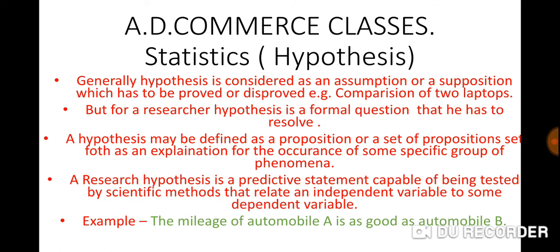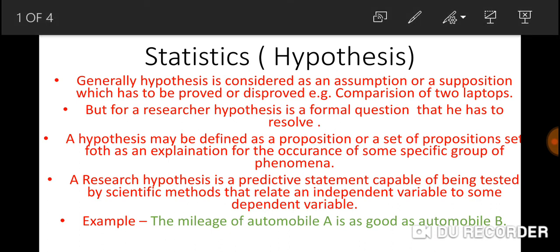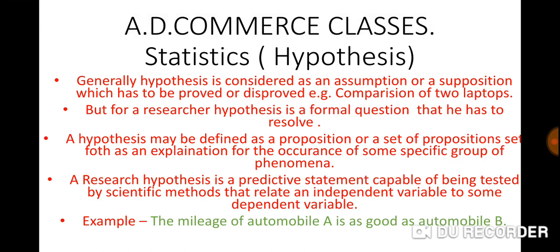If we talk about independent and dependent variables: a child's performance or result depends on how they study — the class or school environment. So the child's result is the dependent variable, and how the child studies is the independent variable. For example, the mileage of Automobile A is as good as B is the example we have given.